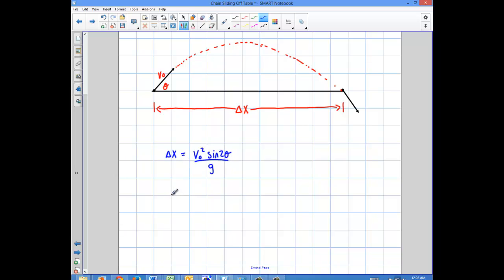So I want to find a maximum or a minimum. So I'm going to take the derivative of the displacement, or I can just call that position if I'm starting from 0. So I can just call that dx over d theta. And what I'm going to do is I'm going to take the derivative of this. These two are constants, so they're going to come out. So I have v initial squared over g.